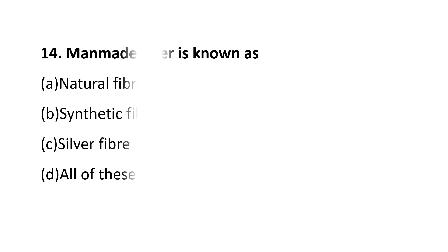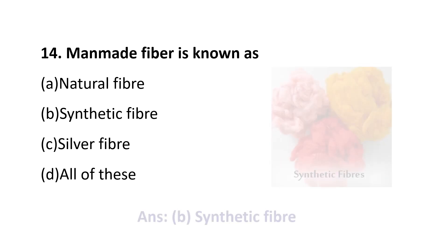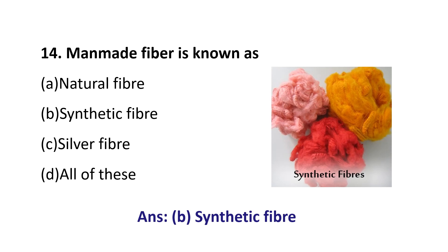Question number 14. Manmade fiber is known as: Option A, Natural fiber; Option B, Synthetic fiber; Option C, Silver fiber; Option D, All of these. The answer is Option B, Synthetic fiber. So, manmade fibers are called synthetic fibers and artificial fibers also.